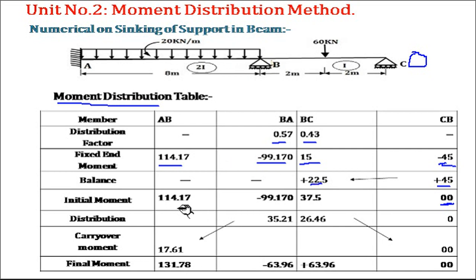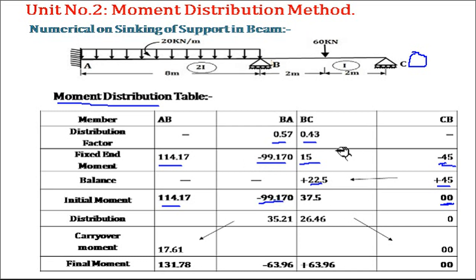Now we find the initial moments, which are fixed moment plus balance. For member AB: 114.17 plus 0 = 114.17. For member BA: minus 99.17 plus 0 = minus 99.17. For member BC: plus 15 plus 22.5 = 37.5. For member CB: minus 45 plus 45 = 0. These are the initial moments.